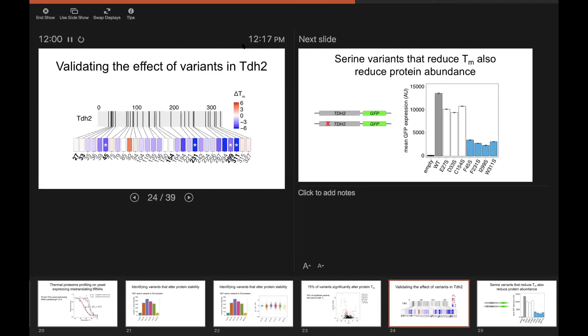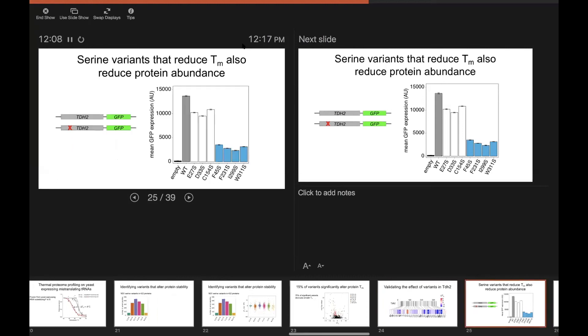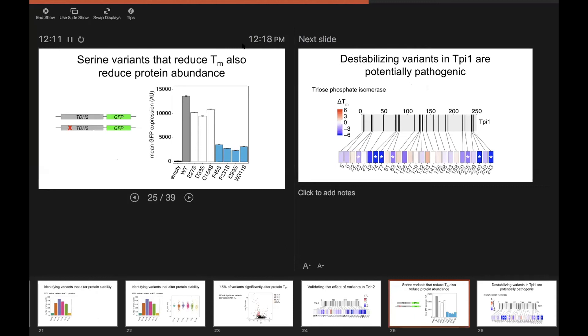And so we took these four significant variants, as well as three that had no effect on TM, and we made these mutations genetically now in a sort of normal way in a tagged copy of TDH2 and measured the abundance of the protein.